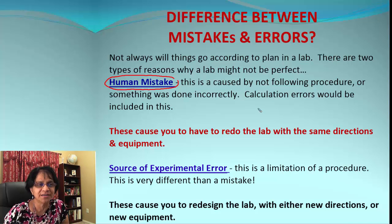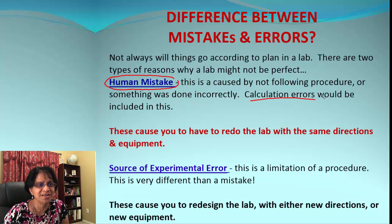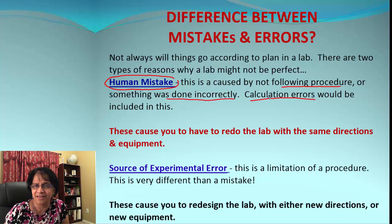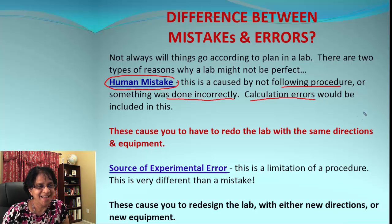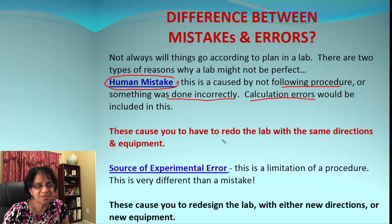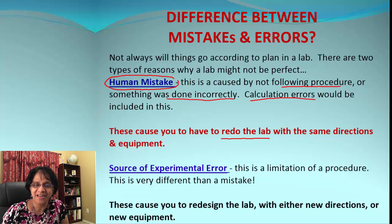Human mistakes are the ones which often occur because of carelessness — either we make a mistake with calculations, we follow the wrong procedure, or we do something incorrectly. Very often this can be avoided. And if it does happen, how do we improve the experiment? Simply go back and redo the lab and follow the directions properly. Human errors are fixable.